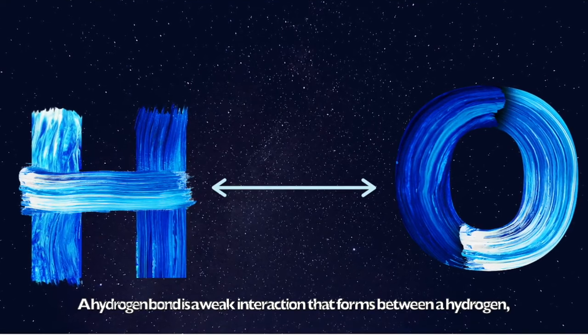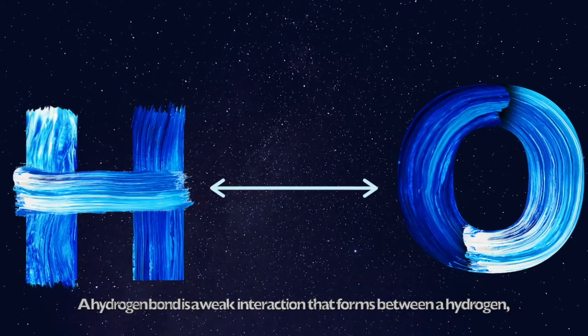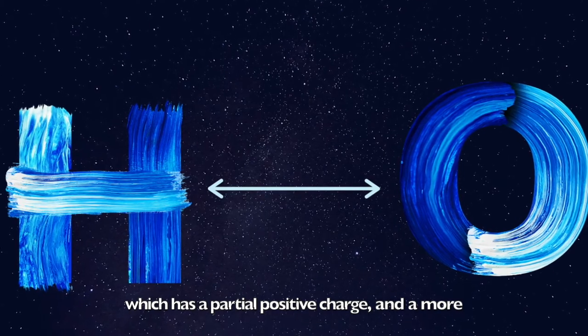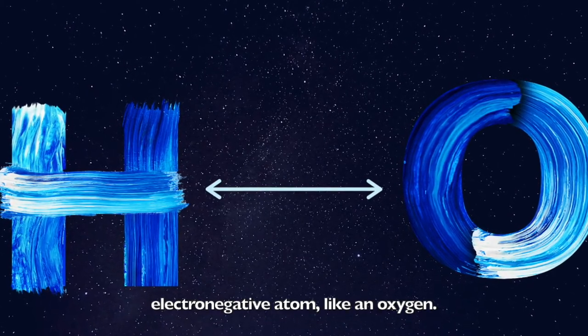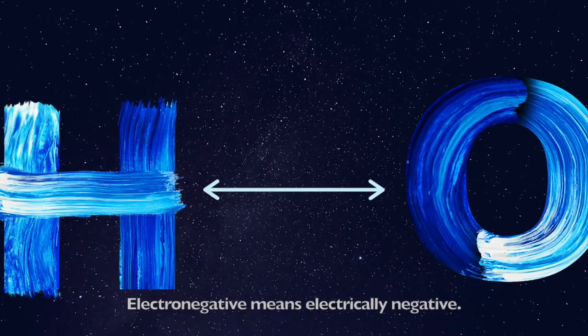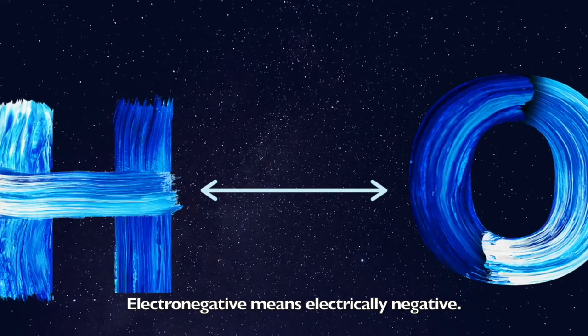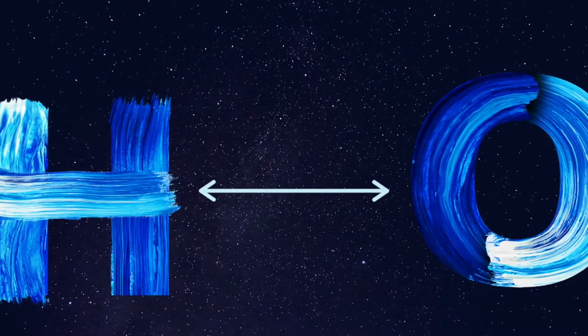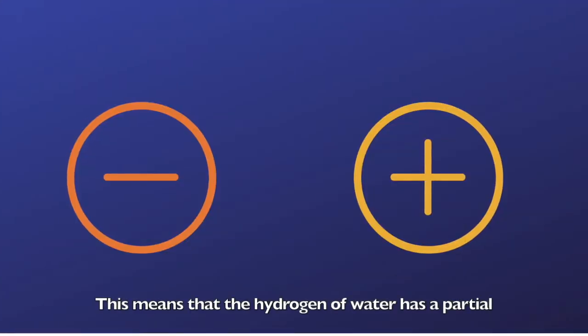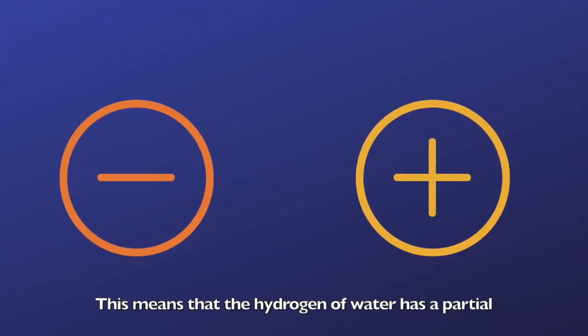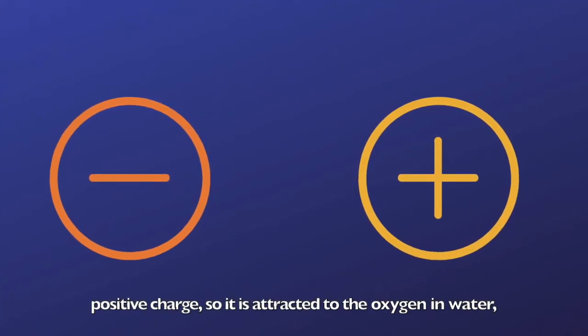A hydrogen bond is a weak interaction that forms between a hydrogen, which has a partial positive charge, and a more electronegative atom, like an oxygen. Electronegative means electrically negative.